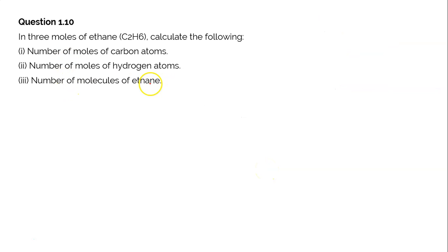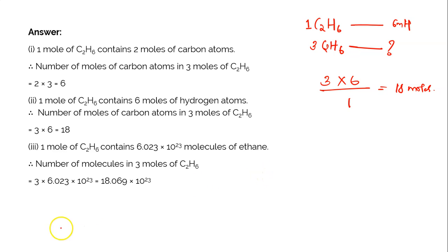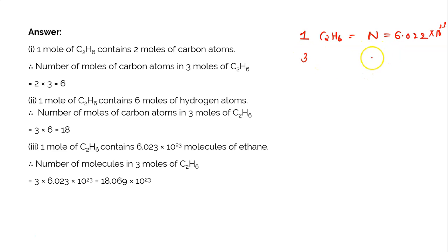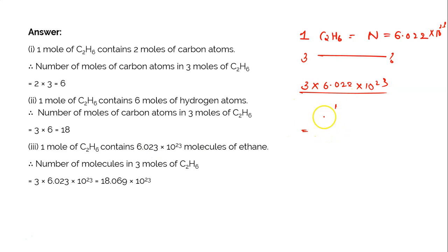The third part asks for the number of molecules of ethane. One mole of C2H6 consists of Avogadro's number of particles, which is 6.022 into 10 power 23. For 3 moles, cross multiply: it will be 3 into 6.022 into 10 power 23 divided by 1, which gives approximately 18.069 into 10 power 23 molecules of ethane.